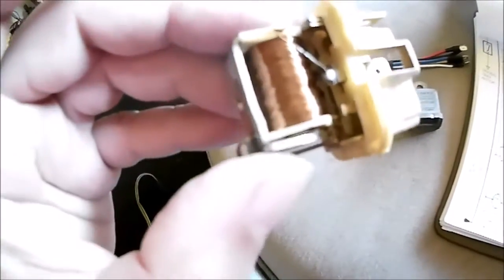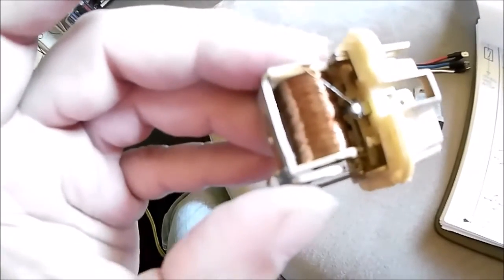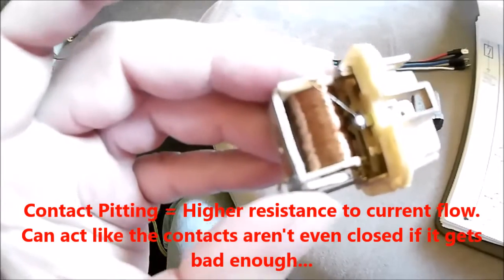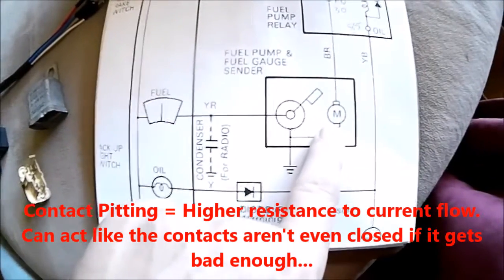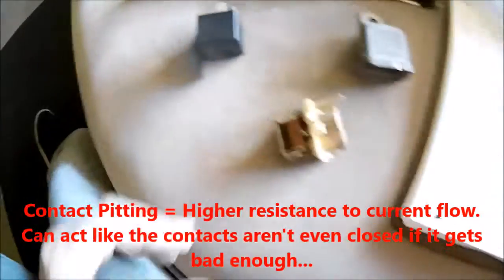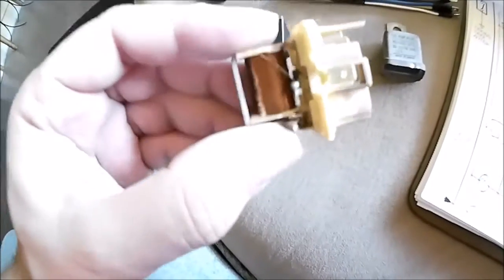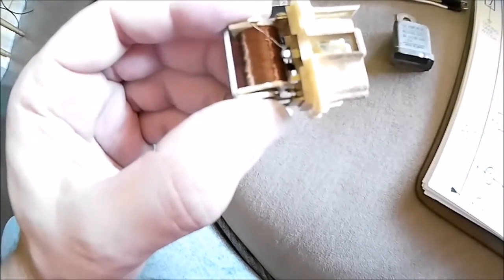Those contacts are pitted, they don't have the surface area they used to. They're not transmitting as much current as they should. The fuel pump will draw anywhere from three to eight amps of current, which is significant. Because of the lessening contact, it'll have higher resistance than normal, and that high resistance creates heat, causing even less transfer of power, and eventually it just opens up and boom, shuts off.